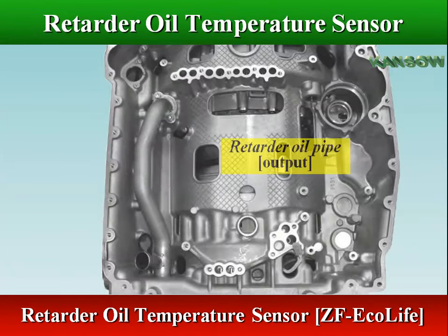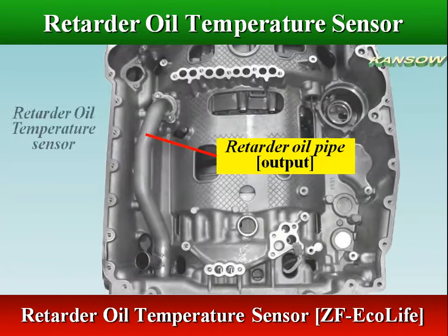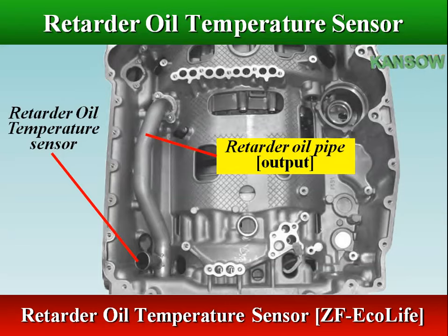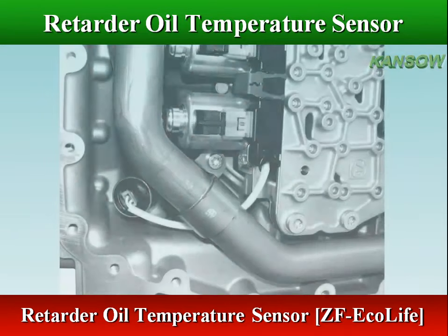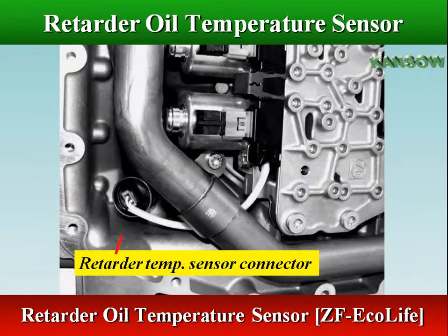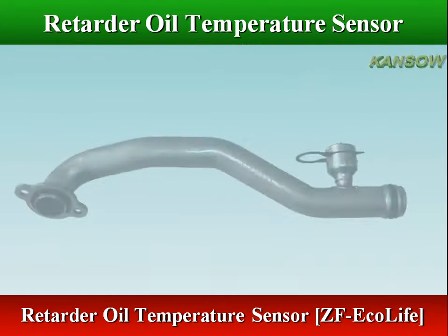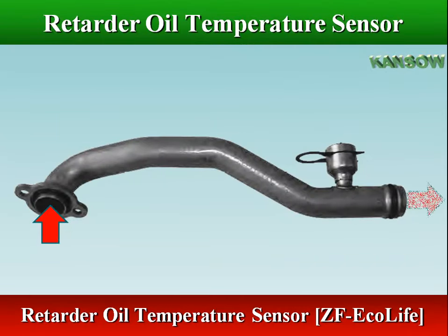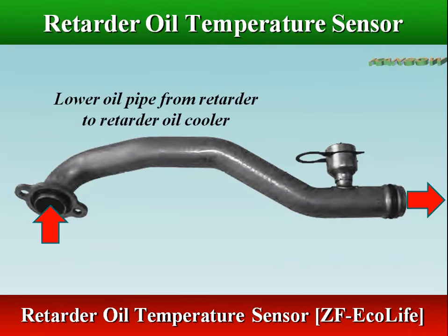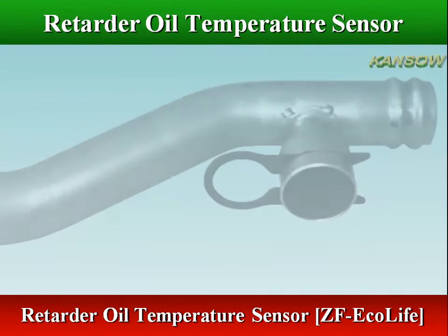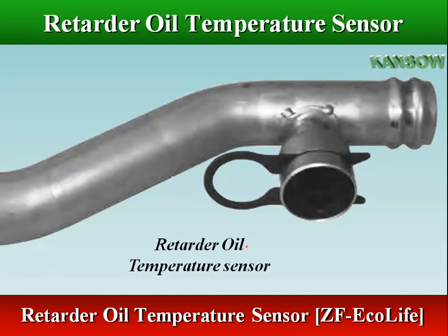In ZF Ecolife transmissions, the retarder oil temperature sensor is internally mounted in the retarder oil pipe — the return line to the retarder oil cooler. This pipe is located below the transmission housing near the valve body.